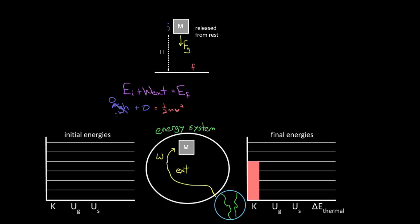So where does this energy come from? The Earth is now doing four units of external work, because the mass gained four units of kinetic energy. This might bother you — all we did was change whether we considered the Earth part of our system, so how can that change the math? It didn't really. Instead of the four units existing initially as potential energy with no external work, we're now saying there was no potential energy to start and four units of external work were done. The numbers come out the same — it's just a different story. Whether you put the Earth inside or outside your system determines whether you say there was initially gravitational potential energy or external work done.